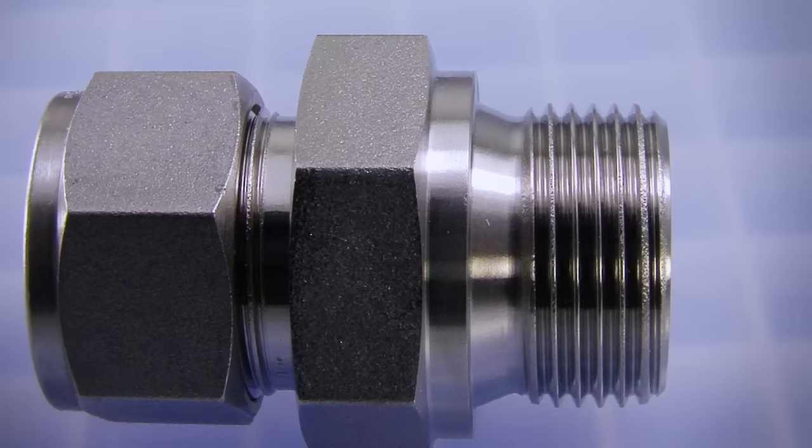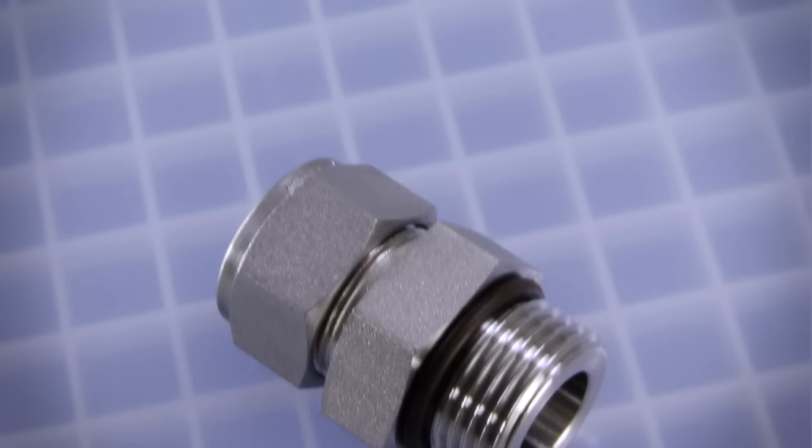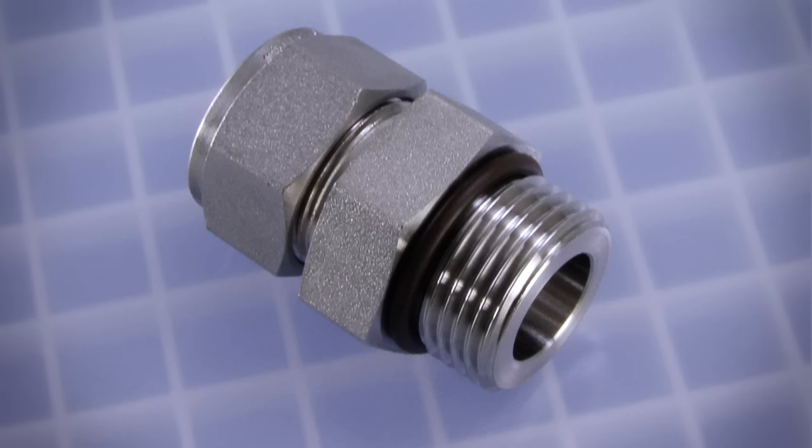Straight threads, which may also be referred to as parallel threads, are not designed to seal. They must rely on other factors such as a gasket, o-ring, or some kind of metal-to-metal contact to create a leak-tight seal.